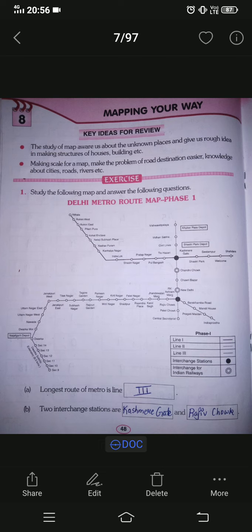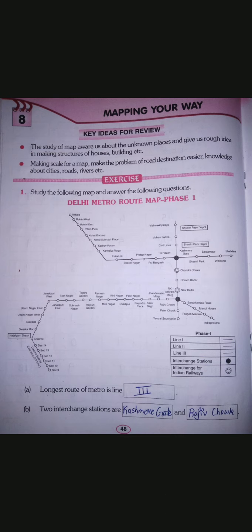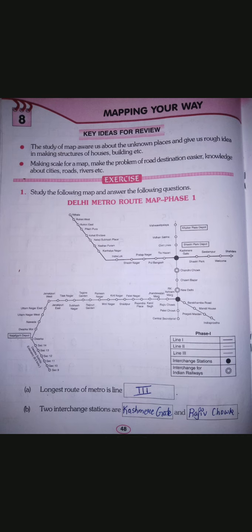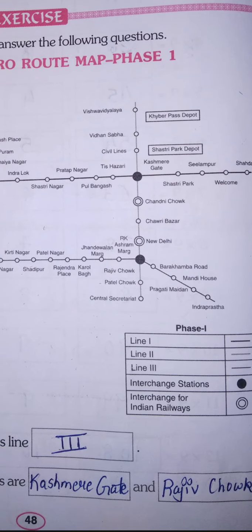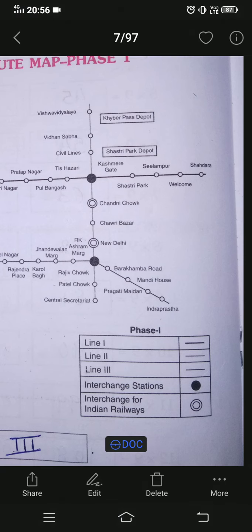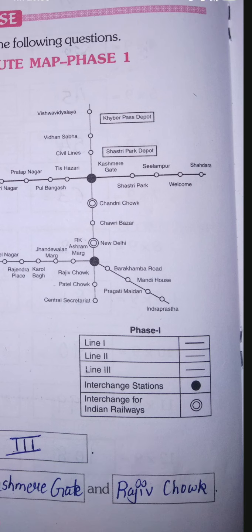Your first question is: study the following map and answer the following questions. The map is of the Delhi Metro Route Map, Phase One. This is a route map of Delhi Metro. You have been provided with a table to clearly understand Phase One. First I'll discuss the table and then we will solve the questions.